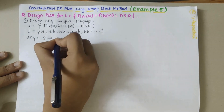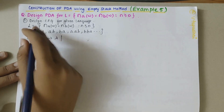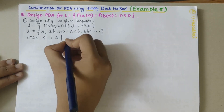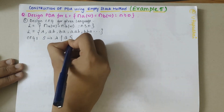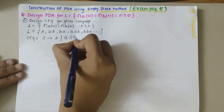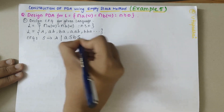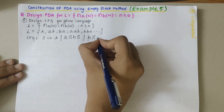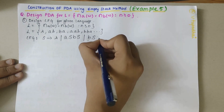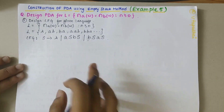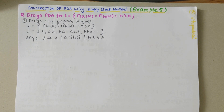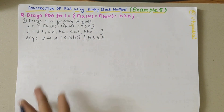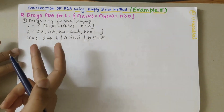Writing the context-free grammar: S derives lambda. It could also be A followed by any number of A's and B followed by any number of B's, or B followed by any number of B's and A followed by any number of A's, or lambda. I have explained how to design the CFG in previous videos, so do watch those videos to understand this in a better manner.